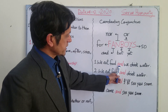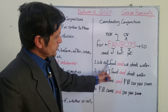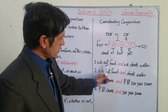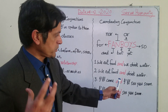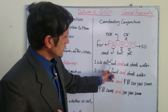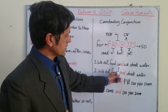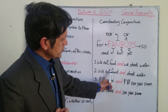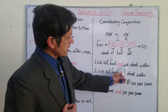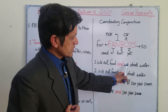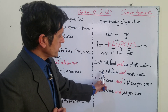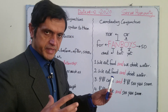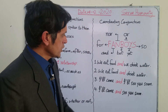'We eat food' is an independent clause. 'We drink water' is also an independent clause. These two are connected by the coordinating conjunction 'and': 'We eat food and we drink water.' We can also delete the repeated subject and say 'We eat food and drink water' without any change in meaning.